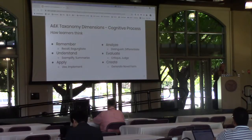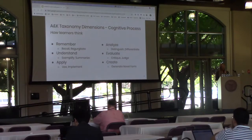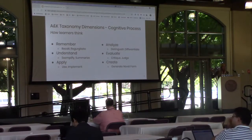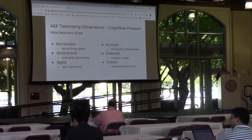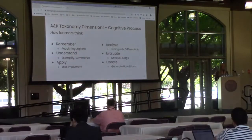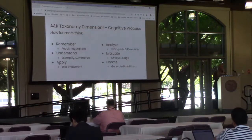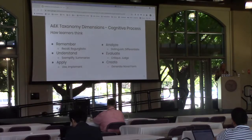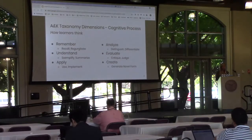The first dimension we'll discuss is the cognitive process dimension. This dimension describes how learners think and is made up of six different cognitive processes. The first is remember, where a learner retrieves relevant knowledge from long-term memory, including things like recalling or regurgitating information. Next is understand, where learners construct meaning from instructional messages including oral, written, and graphic communication — that includes exemplifying or summarizing information.